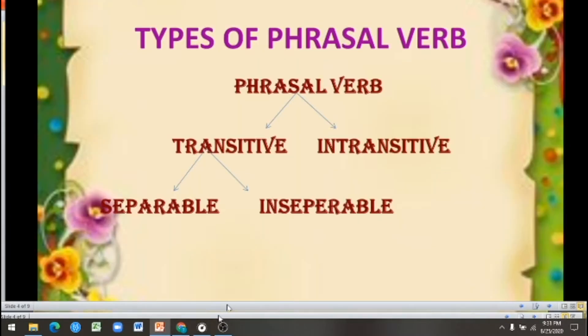Now let us see about the types of phrasal verbs. There are two types of phrasal verbs. The first one is transitive phrasal verbs and the second one is intransitive phrasal verbs. Then again, the transitive phrasal verb is divided into two: the first one is separable and the second one is inseparable.